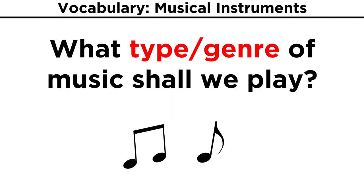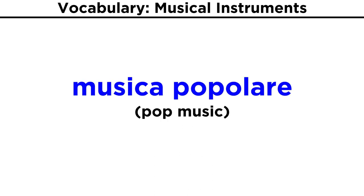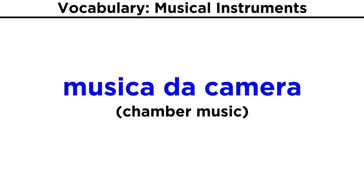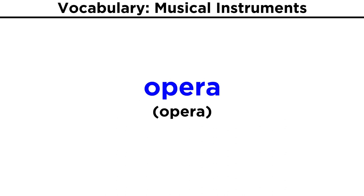That's a lot of instruments, so what kind of music do we want to play? Most of the genre titles are just the English words: jazz, blues, folk, rock, and rap all stay the same in Italian. We could also say musica popolare, musica da camera, ballata, opera. The list goes on.